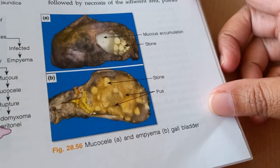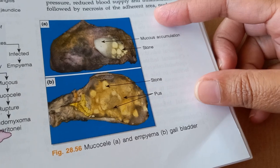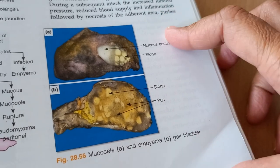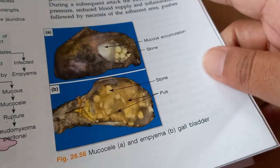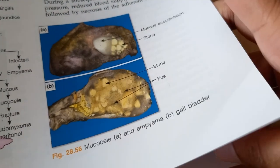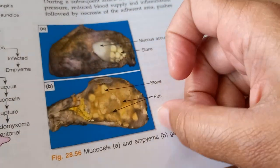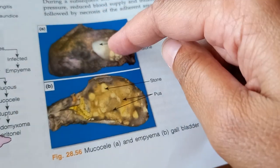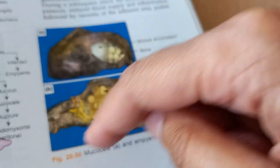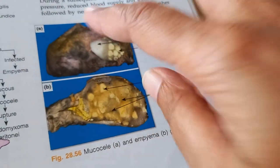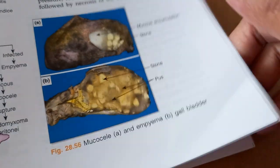What is this diagram? Mucosele, empyema, gallbladder. Somehow I feel this labeling is wrong. This is a mucosele and this is an empyema. So, mucosele A, empyema B, and both are gallbladder. Is that the way they are trying to say?